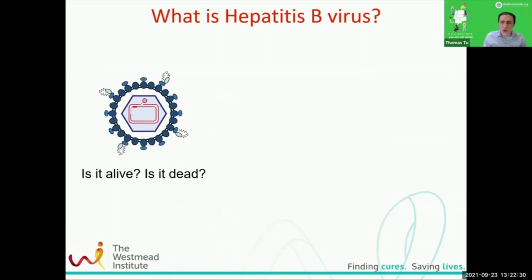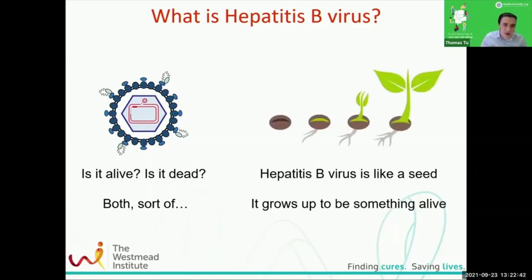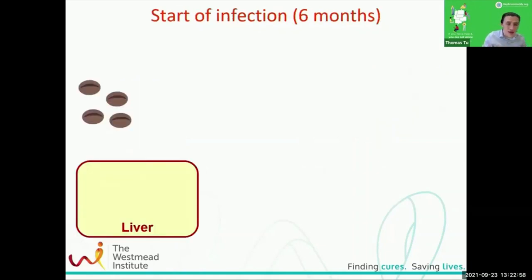Let's start with what Hepatitis B is. What is a virus? Is it alive? Is it dead? It's actually a little bit of both. The best metaphor is to think of Hepatitis B virus like a seed — it itself is not alive, but it has the potential to become something alive. When you're infected with Hepatitis B, you get these seeds traveling through your blood, and they meet the liver, which is basically where the virus likes to embed itself and start growing.